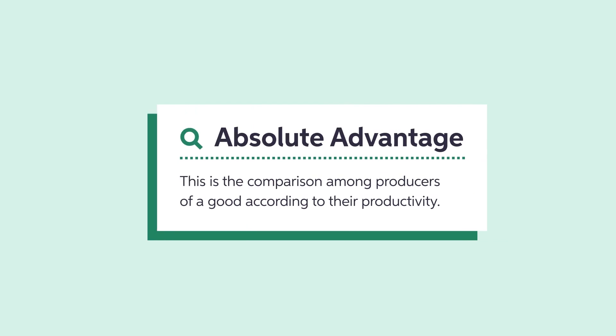Before we dive into the concept of comparative advantage, let's first look at absolute advantage. Absolute advantage compares the raw output per unit of time among producers, companies, or countries. In other words, absolute advantage is how producers of a good compare based on their productivity. Keep in mind that this is a one-on-one comparison among parties for one particular good.